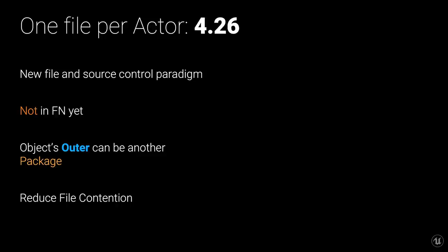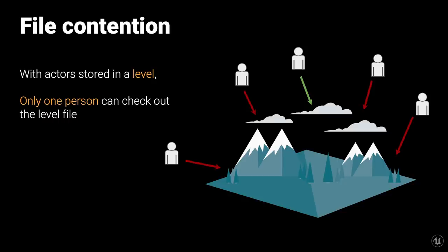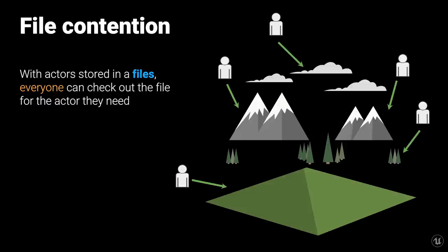Another upcoming feature is one file per actor, coming in Unreal Engine 4.26. This is a new file and source control paradigm. Not yet used in Fortnite, but expected to be used soon. Currently, actors stored in a level share a binary file where only one person can check out that level at a time since binary files can't be merged like code. With one file per actor, each actor becomes a separate file, so multiple people can check out what they need to work on as long as they're not working on the exact same objects.